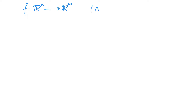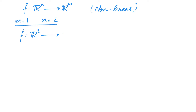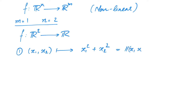Now let us look at some non-linear examples of functions from Rⁿ to Rᵐ. To begin with, we will look at the special case where m equals 1 and n equals 2, that is, functions f from R² to R. One of the simplest such functions is the one that takes the pair (x₁, x₂) to x₁² + x₂², which is nothing but ‖(x₁,x₂)‖². The non-linearity comes from powers greater than 1, such as x₁².